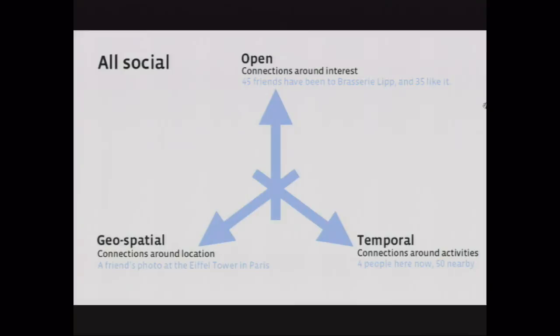All of this is inherently and fundamentally social. We think about it in three axes. The Open Graph is really all about connections based around interests — a number of my friends have been to Brasserie Leap and 35 of them like it, which is great context when making a decision. From a geospatial perspective, connections are all about location — here's a photo a friend took of the Eiffel Tower in Paris last year. And temporal is all about activities: there are four people here right now and 50 people nearby.